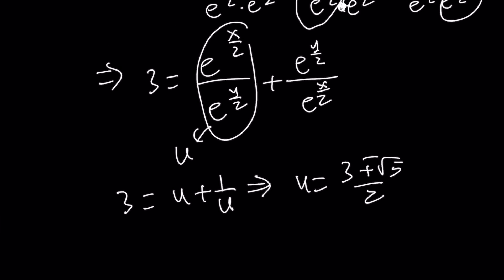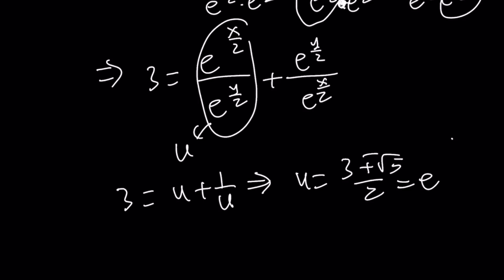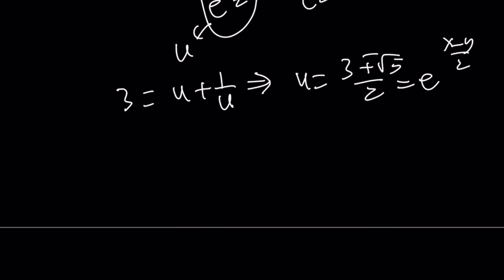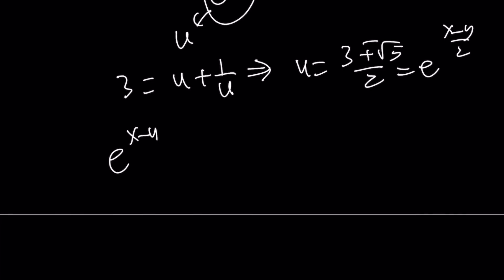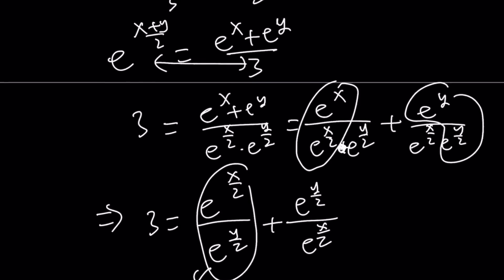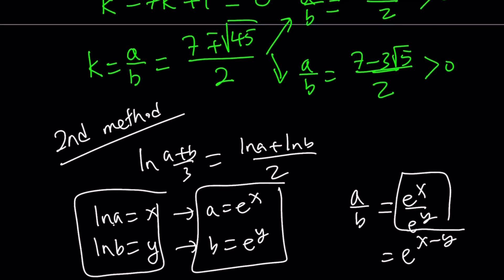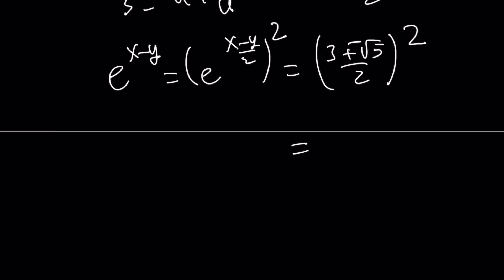But we're looking for e^(x-y). That is going to be (e^((x-y)/2))^2. And that's going to be ((3 ± √5)/2)^2. And guess what that's going to give you? That's going to give you the same value that we got with the first solution, which is (7 ± 3√5)/2.